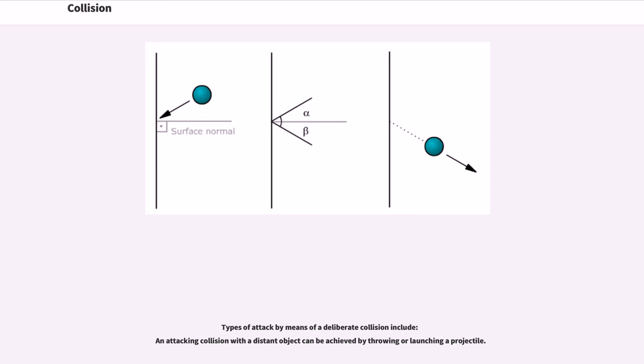Types of attack by means of a deliberate collision include: an attacking collision with a distant object can be achieved by throwing or launching a projectile.